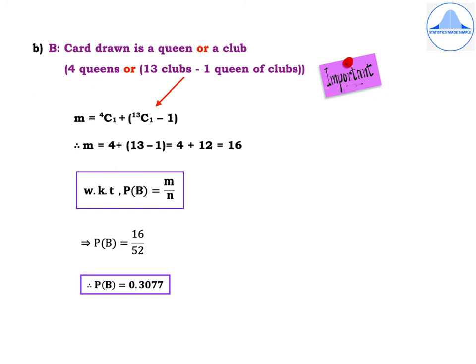Second subdivision: define event B as card drawn is a queen or a club. There are 4 queens and 13 clubs, but among the 13 clubs there is one queen of clubs already considered. So m = 4C1 + (13C1 − 1) = 4 + 12 = 16. Therefore P(B) = 16/52 = 0.3077.